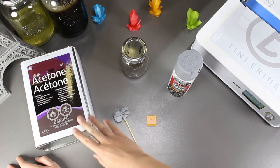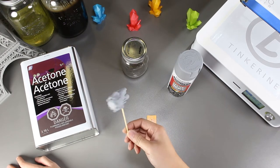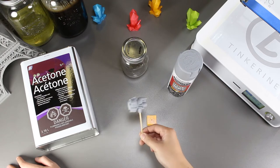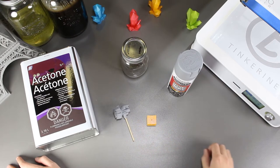Welcome to another episode of Tinkering Experiments. Today we are going to try and vapor smooth out one of our prints with acetone, but a bit differently this time.